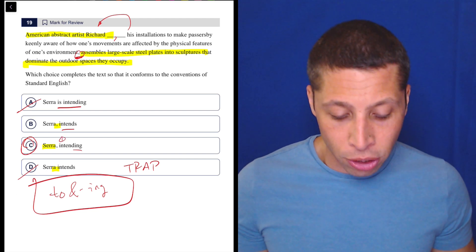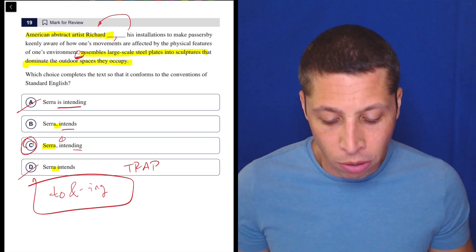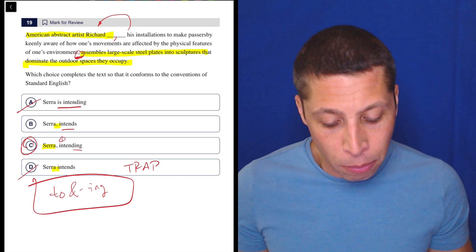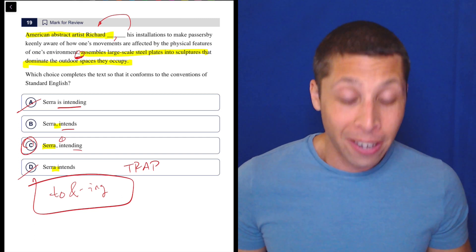Intending his installations to make passersby keenly aware of how one's movements are affected by the physical features of one's environment, American abstract artist Richard Serra assembles large scale steel plates into sculptures that dominate the outdoor spaces they occupy.